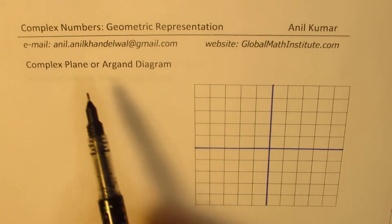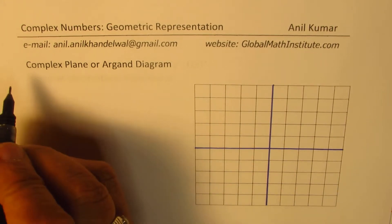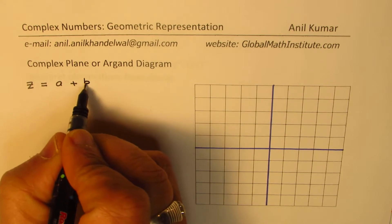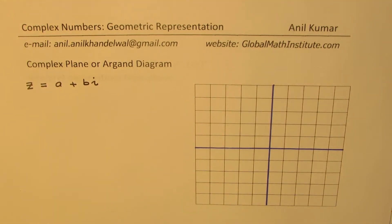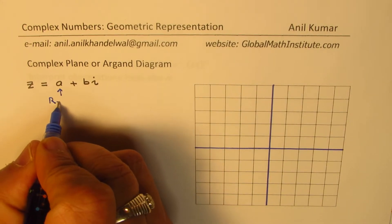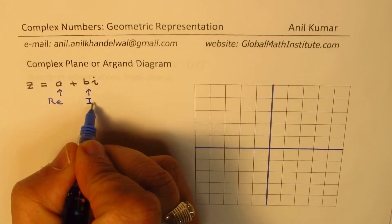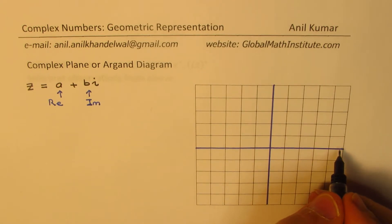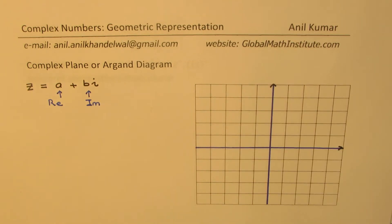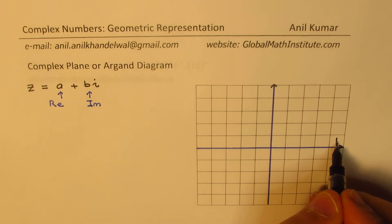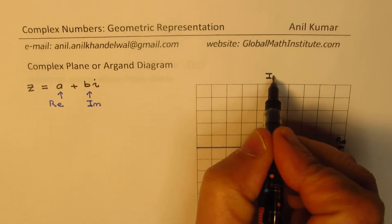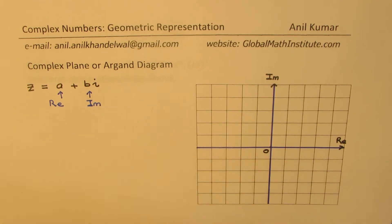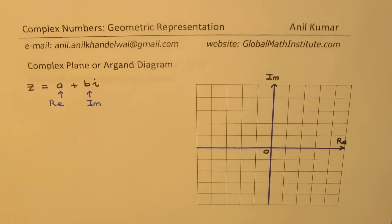Just as a Cartesian plane, a complex plane has two coordinates. A complex number, let's take an example, will normally be written as z equals a plus bi. Here, a is the real part and b is the imaginary part. On a Cartesian plane, we represent the real and imaginary parts along horizontal and vertical axes — the real part along the horizontal x-axis and the imaginary part along the vertical axis, with the center at 0.